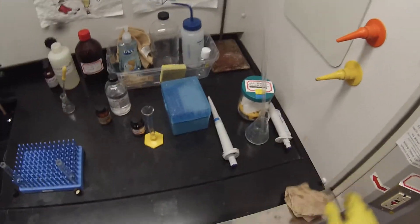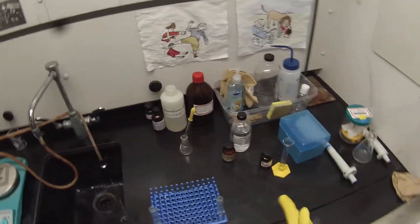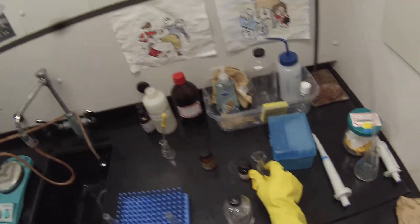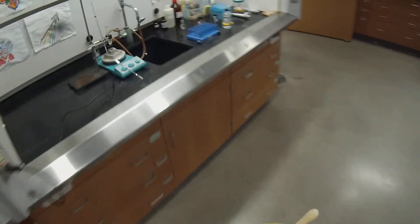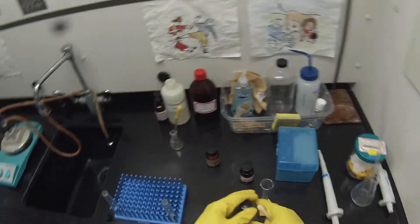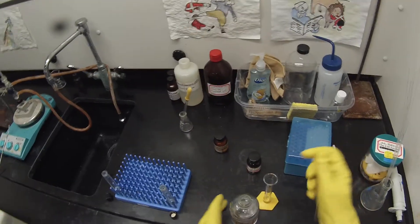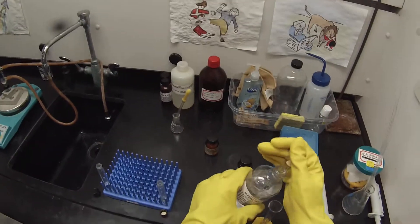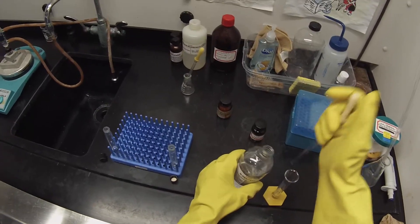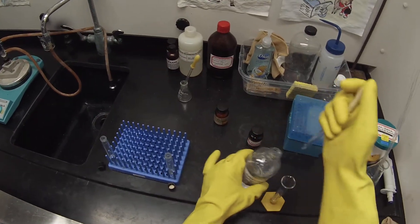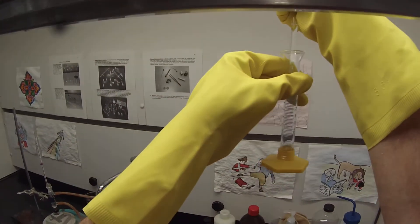So now before we add the t-butanol to the centrifuge tubes, we're going to add our extraction solvent, which is n-pentane. I'm going to grab another pipette and pipette bulb. And we're going to put about a milliliter of n-pentane in each. I'll measure out 2 milliliters of pentane.